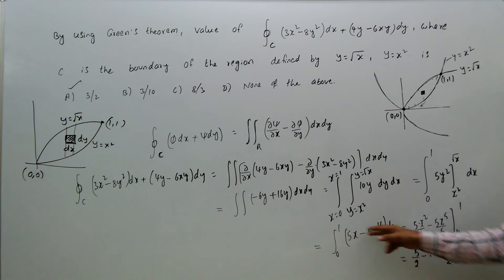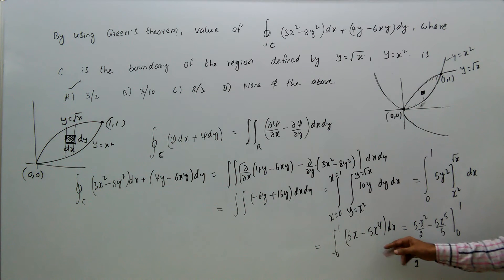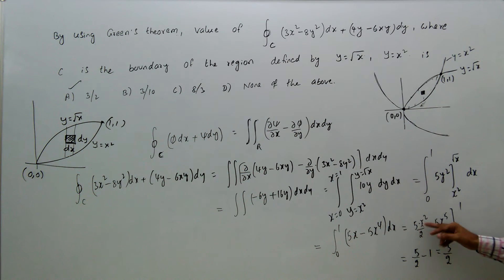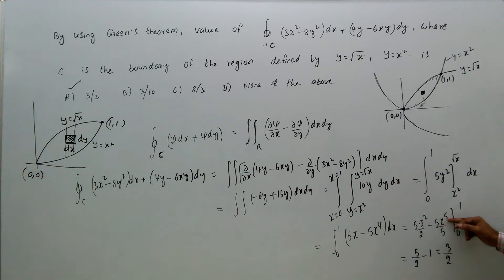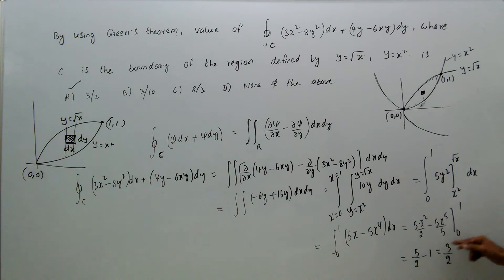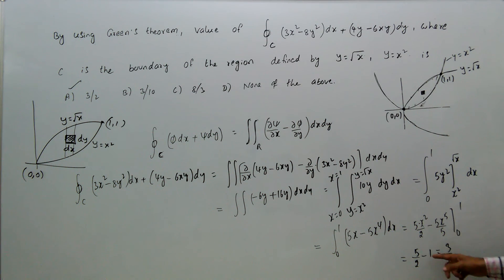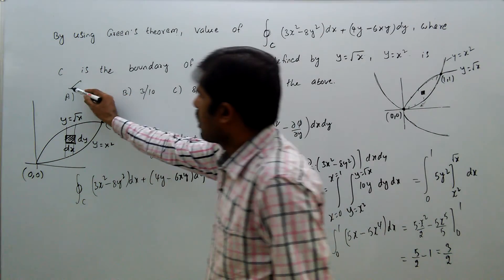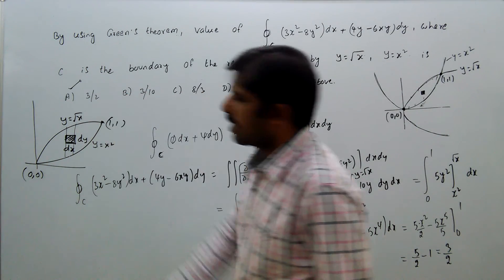Integrating from 0 to 1: the integral of 5x is 5x²/2 and the integral of -5x⁴ is -5x⁵/5 = -x⁵, with limits 0 to 1. Substituting x = 1: 5/2 - 1 = 3/2. Substituting x = 0 gives 0. So the answer is 3/2, which is option a.